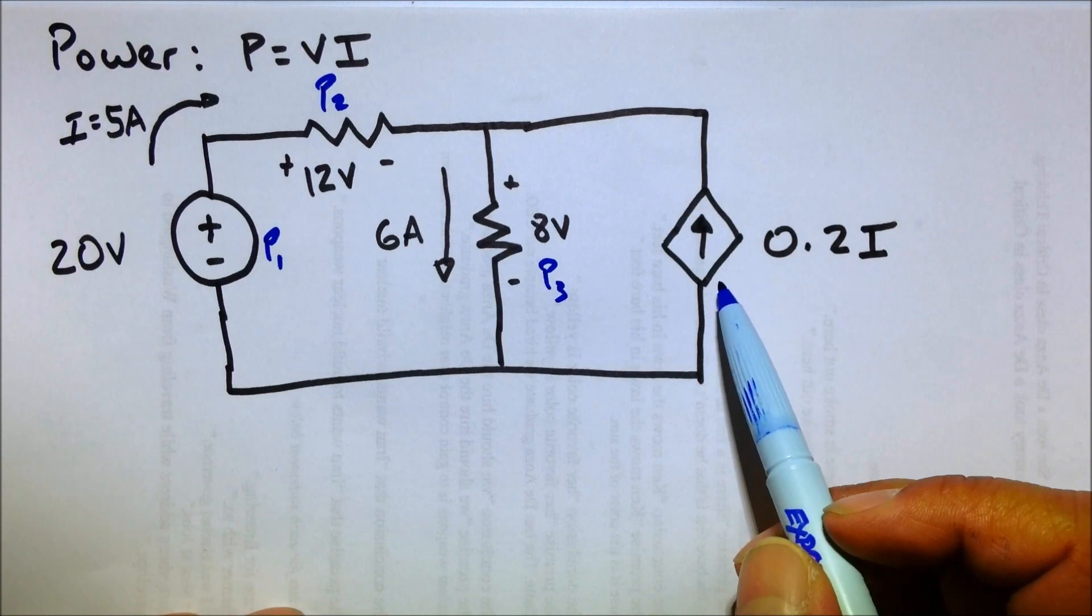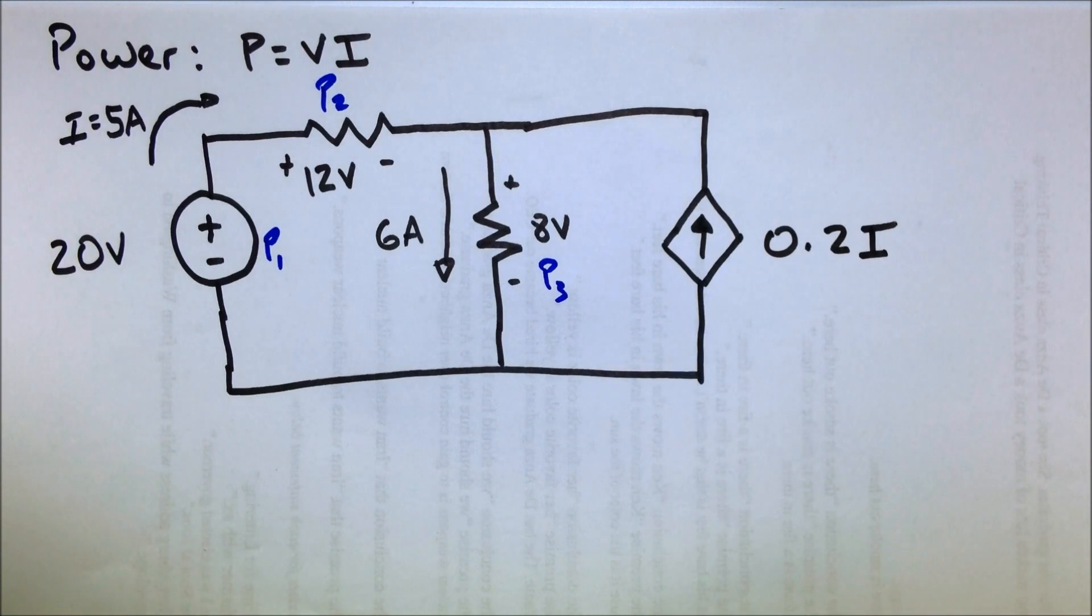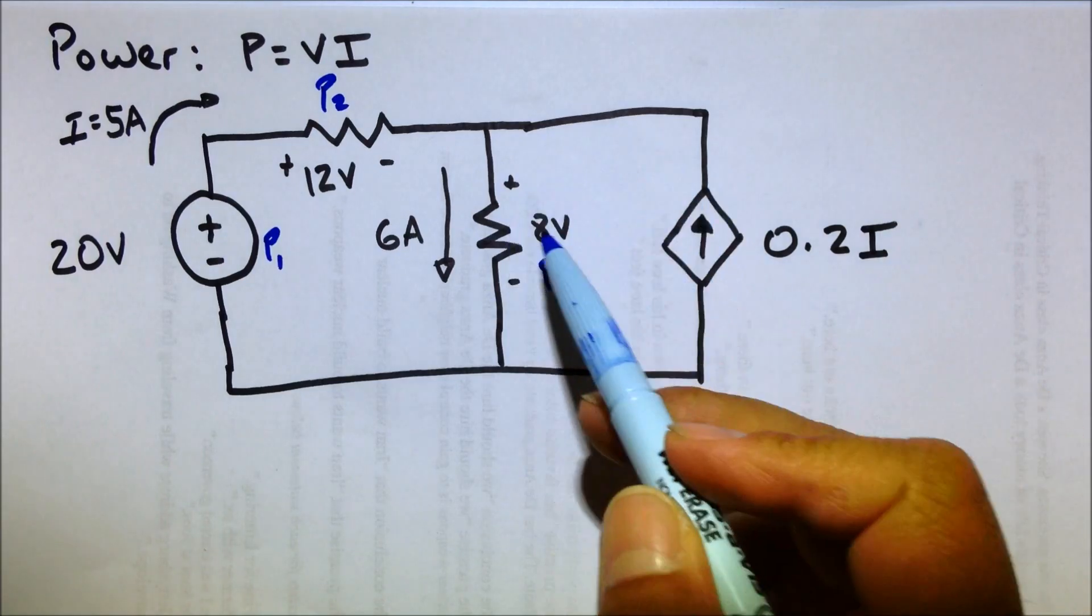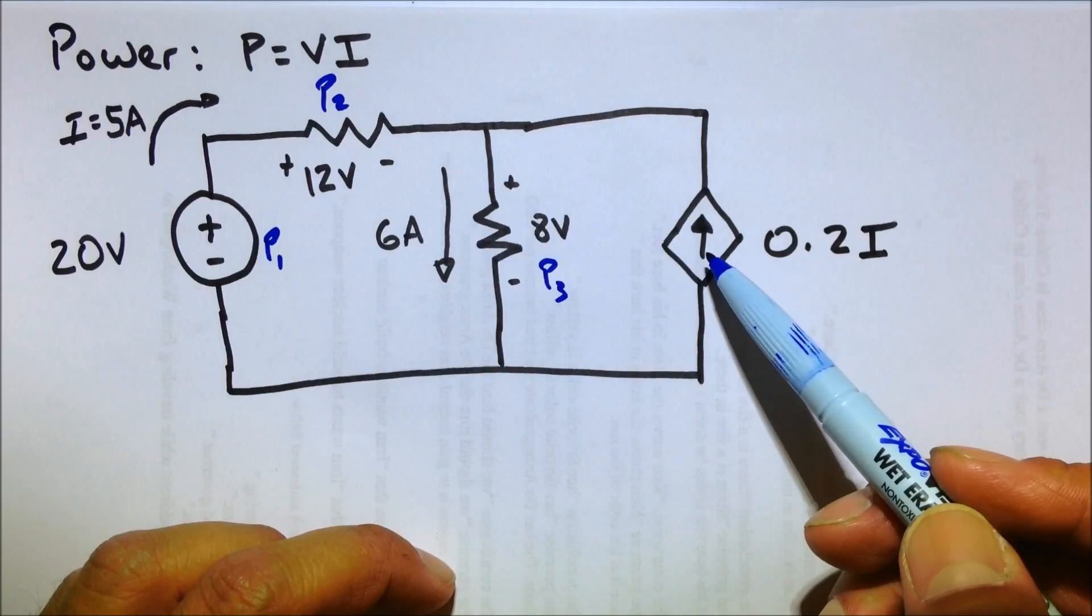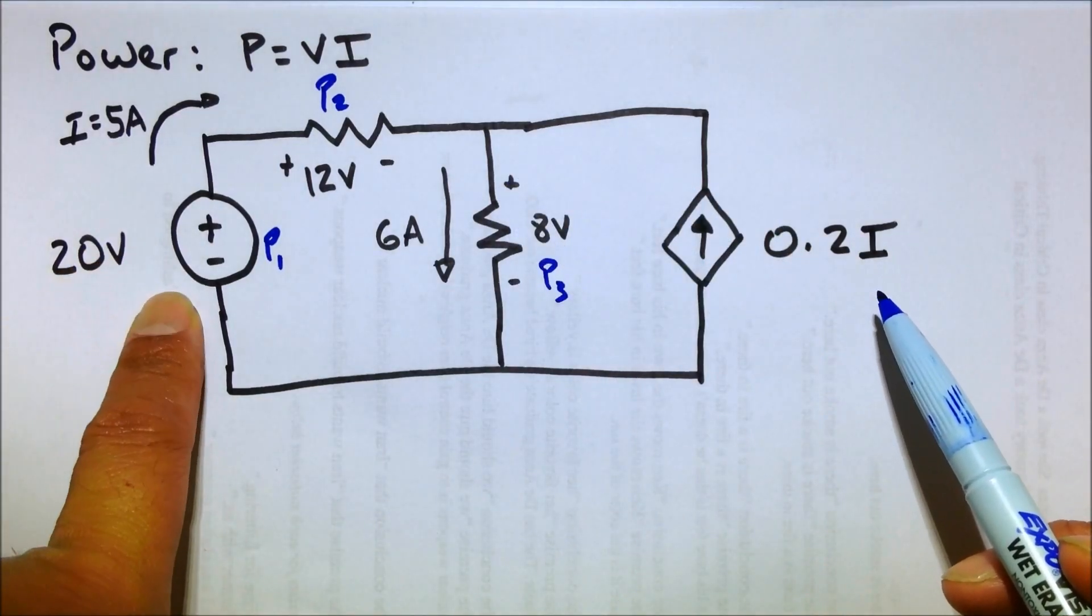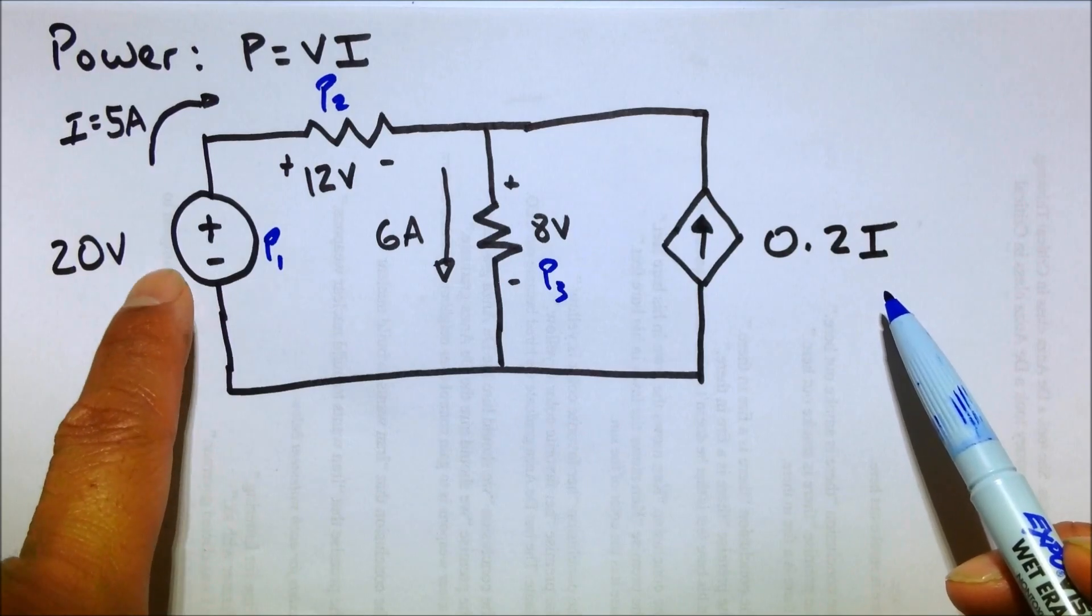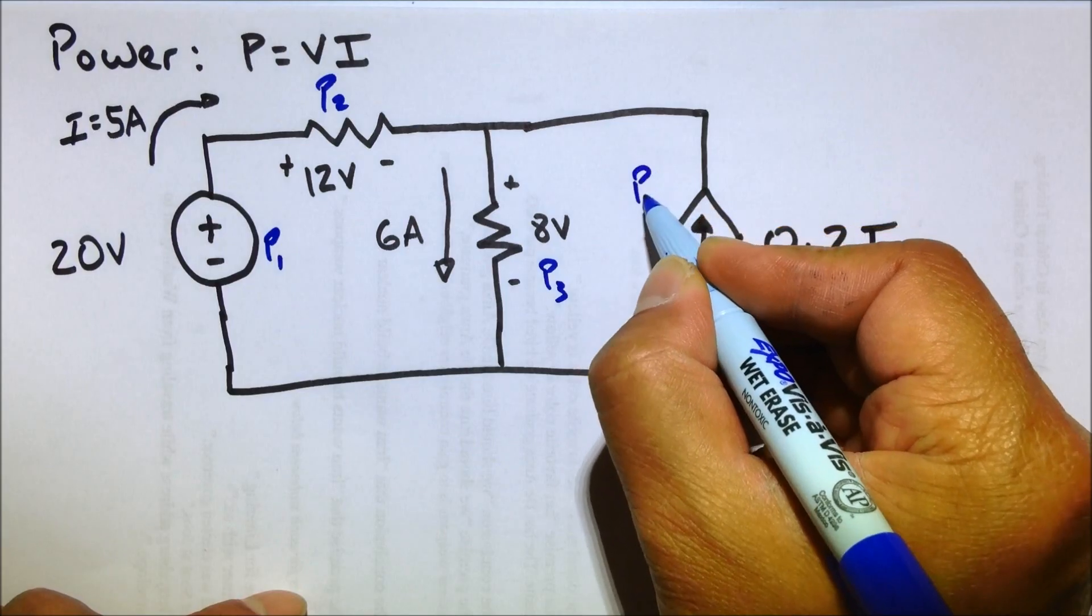And this is a current controlled current source. So the idea here is that it's a source of current. So it's supplying power to the system. The amount of current it supplies is based upon i, the current being supplied by that source. So let's go ahead and call this guy P4.